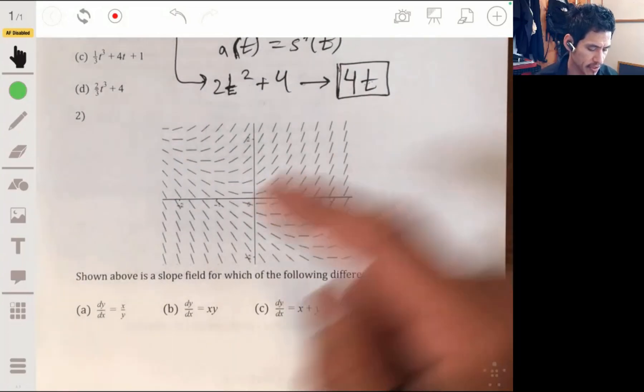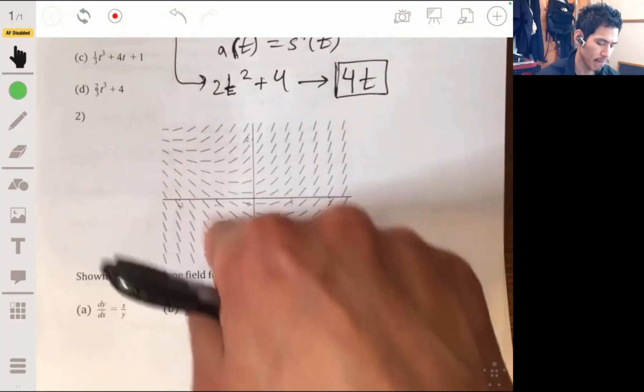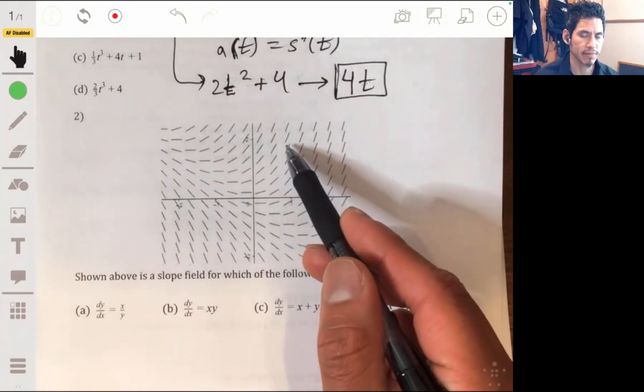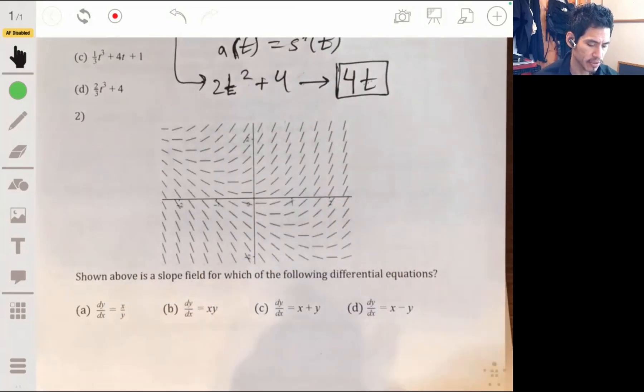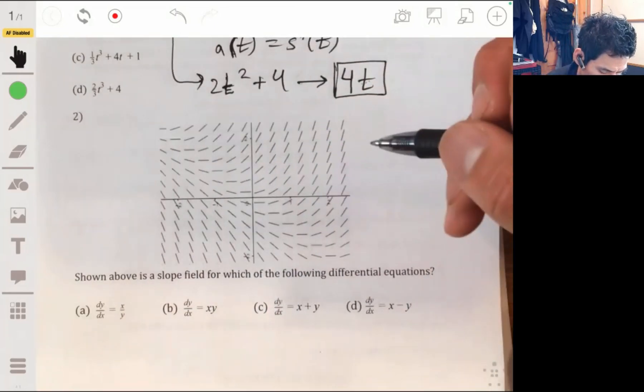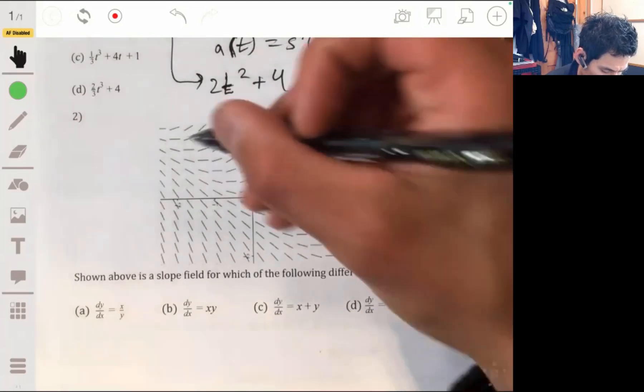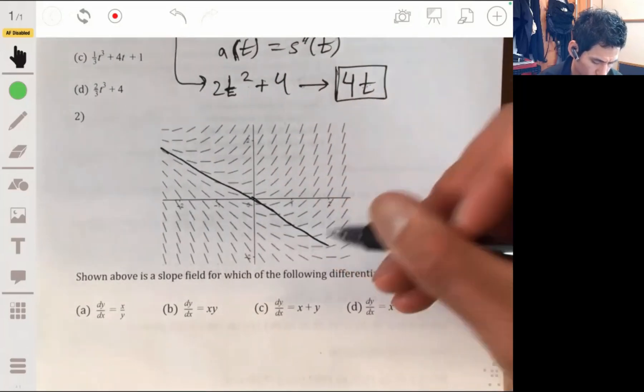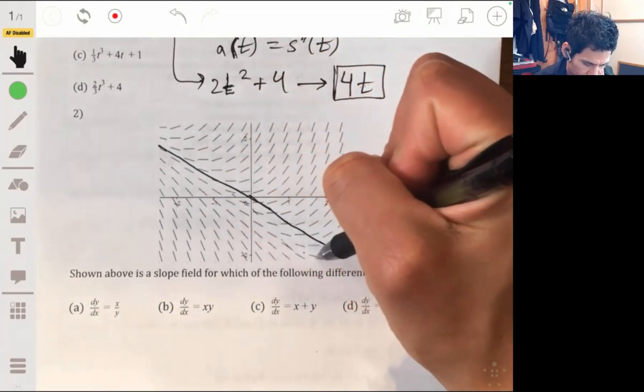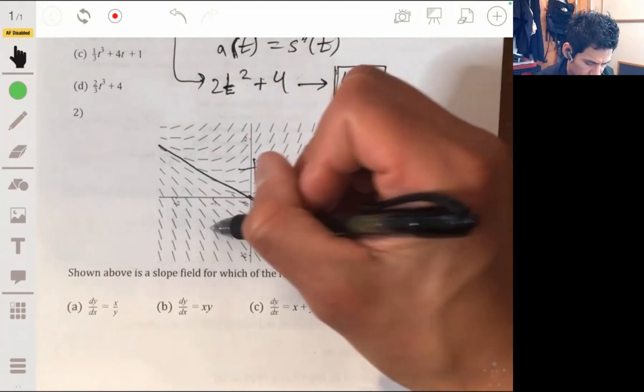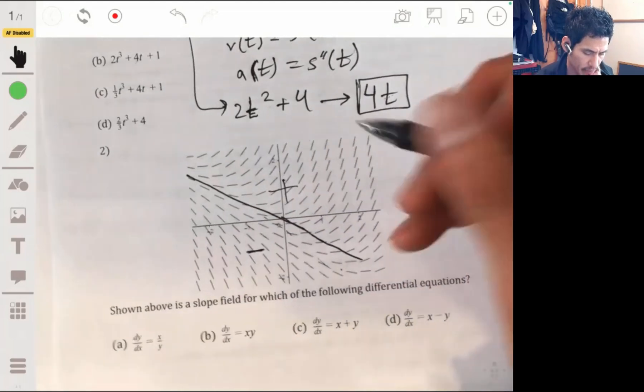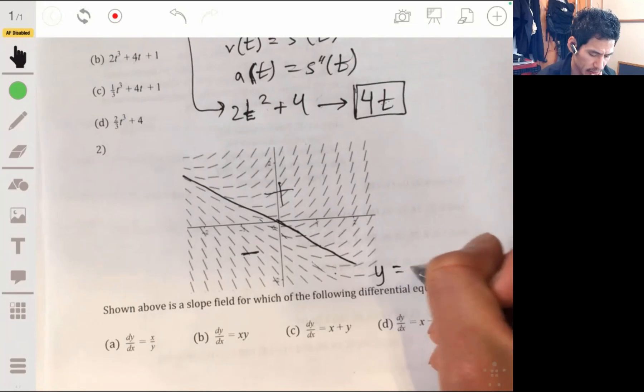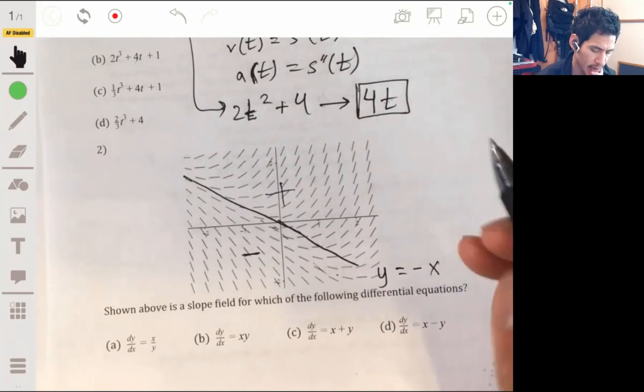But anyways, over here, I just want you to understand that these are slope lines, so these little line segments represent the slopes or the derivatives at certain points. So if we analyze this, we can kind of see it's like if there's a line somewhat here where it goes from being positive to negative being below this line and positive being above, that would be the line y equals negative x.